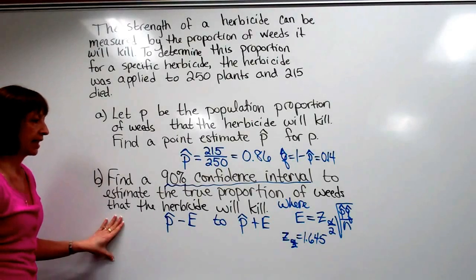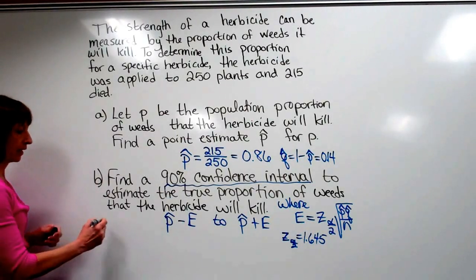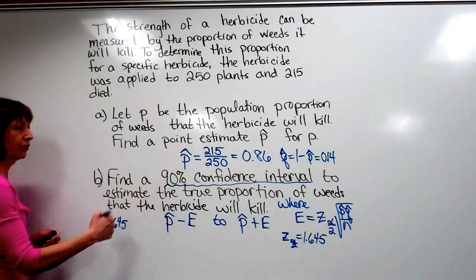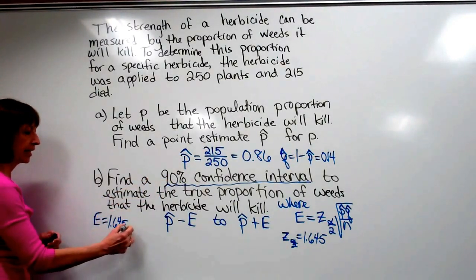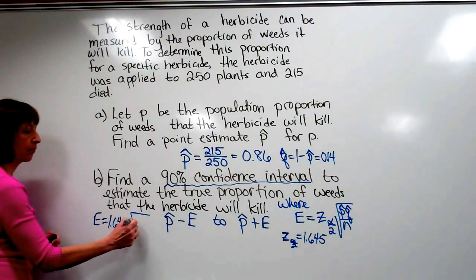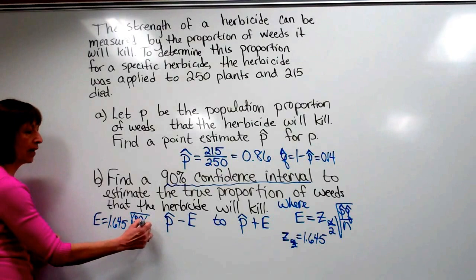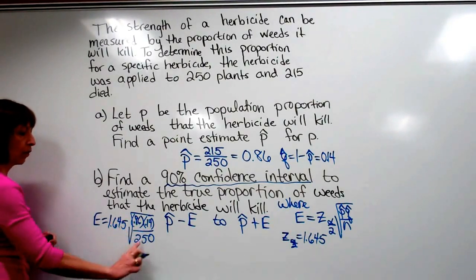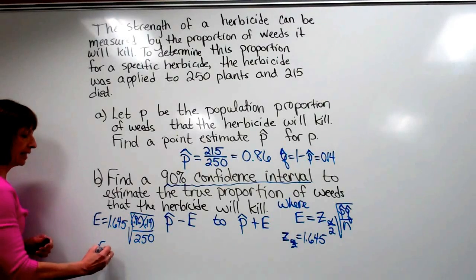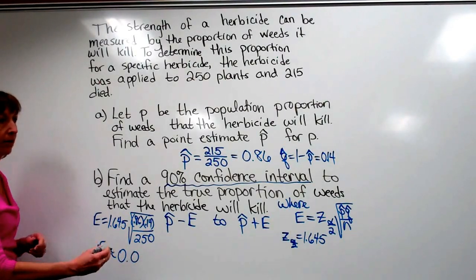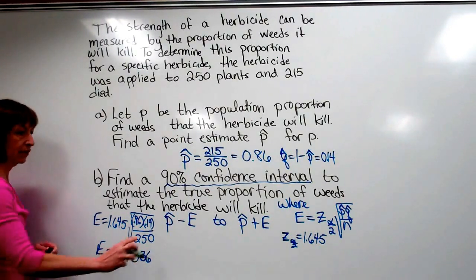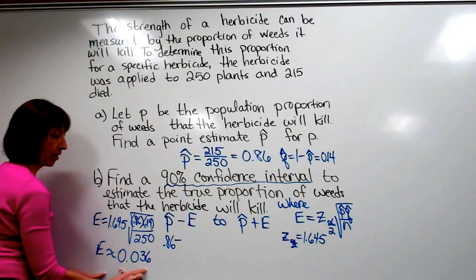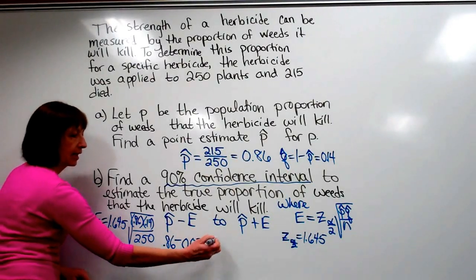We calculate e off to the side: e equals 1.645 times the square root of P-hat (0.86) times q-hat (0.14) divided by n (250). Working this out on the calculator, e is approximately 0.036. So we take our P-hat of 0.86, subtract e (0.036) for the lower bound, and add e for the upper bound to form the confidence interval.